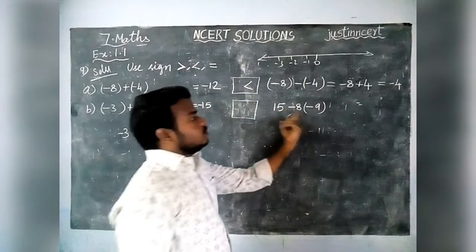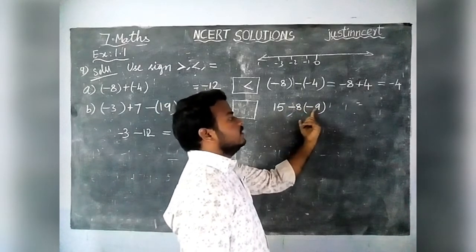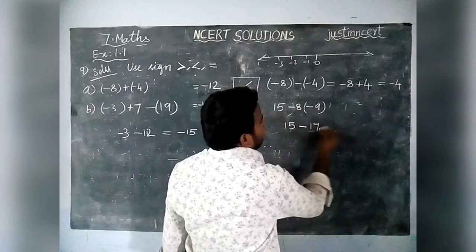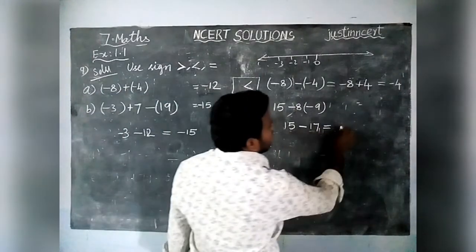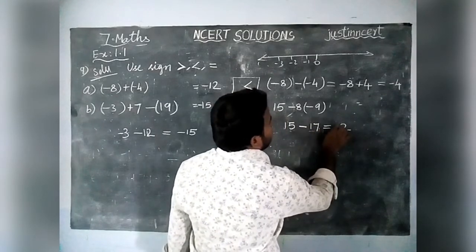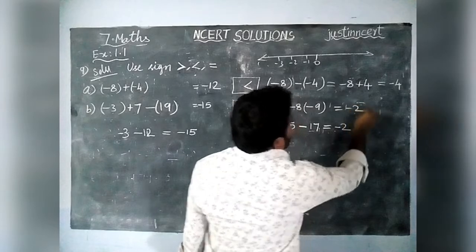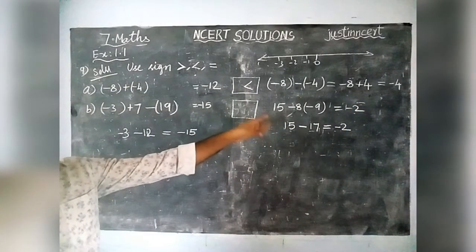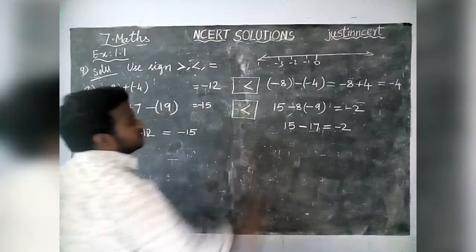Now the right hand side: these two also have the same sign, so we add them: minus 8 and minus 9 give minus 17. Then we have 15 minus 17, which gives a difference of 2, and the greatest number is 17, so the answer is minus 2. Comparing: left hand side is minus 15, right hand side is minus 2. The greatest number is minus 2, so we use the less than symbol.